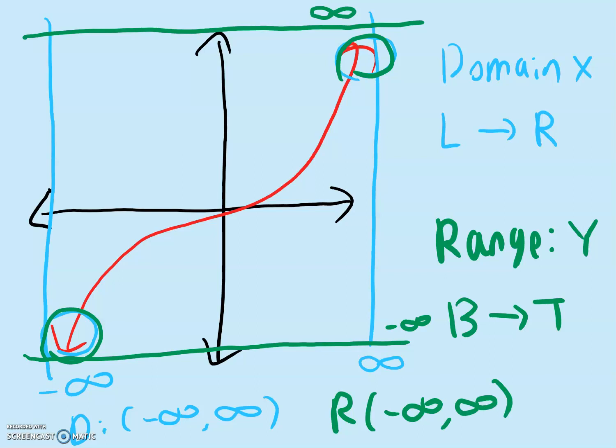If you look at this graph, it doesn't really matter what you do to this cubic function. You can move it up or down, left or right, you can compress it, you can stretch it, you can reflect it over the x-axis. No matter what you do to it, you will have arrows on both the left and right, and on the bottom and the top. So for all cubic functions, the domain is always going to be negative infinity to positive infinity, and so will the range.